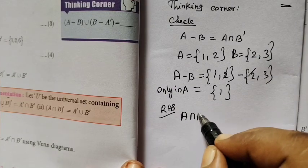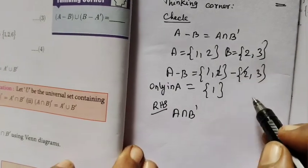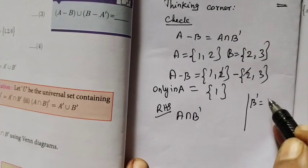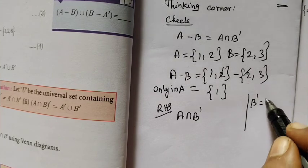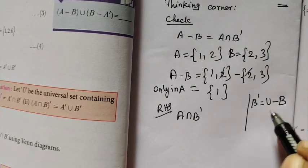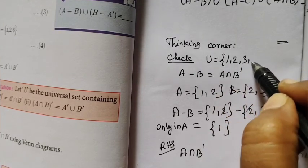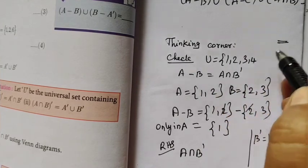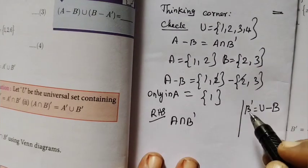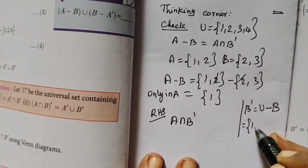Then again this is A intersection B dash. A intersection B dash. B dash is the formula. So first we will write U. U is 1, 2, 3, 4.